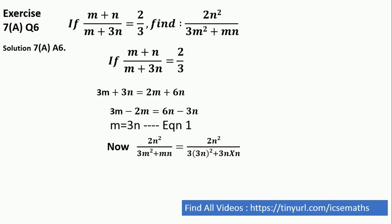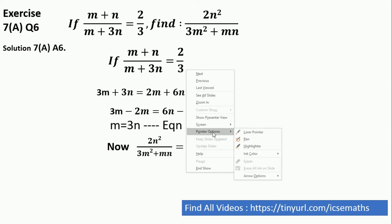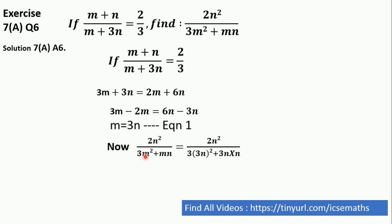So the equation will become 2n square oblique - here it is required to put the value. So here you can say instead of m square I am going to write 3n. So this will become 3 into 3n square plus 3n which is the value of m. So by replacing this m I am putting 3n into n. That's it.